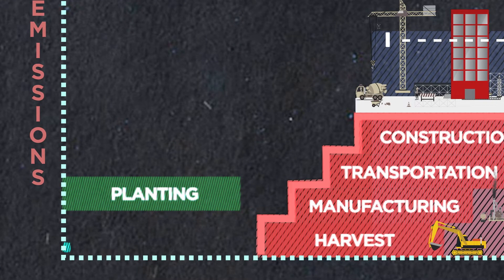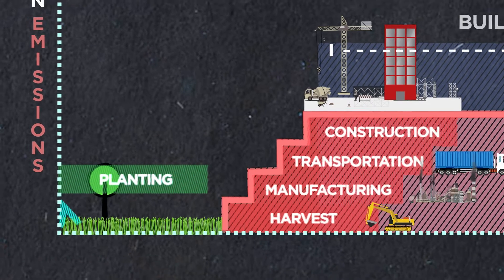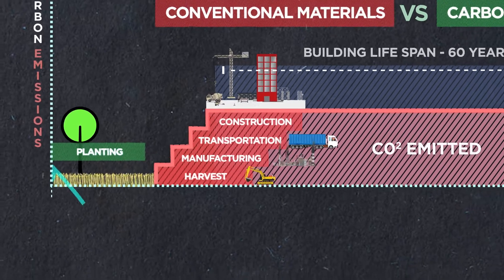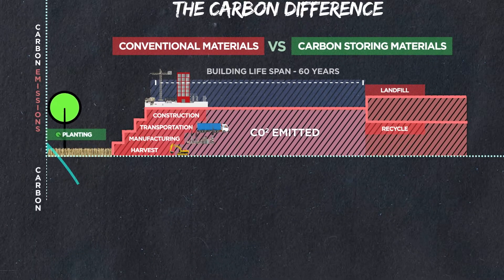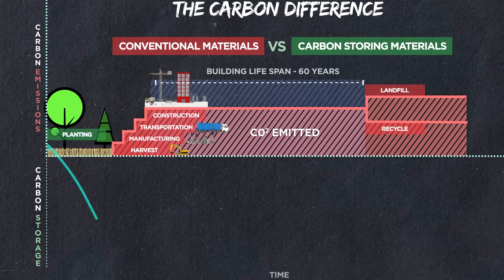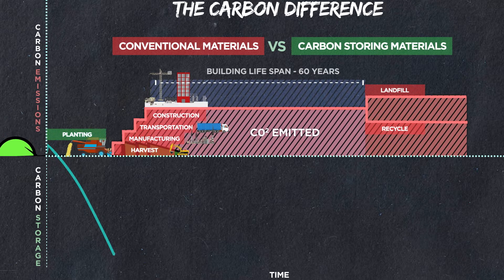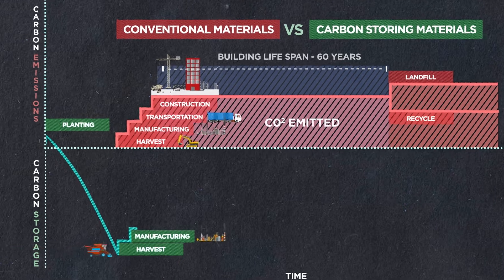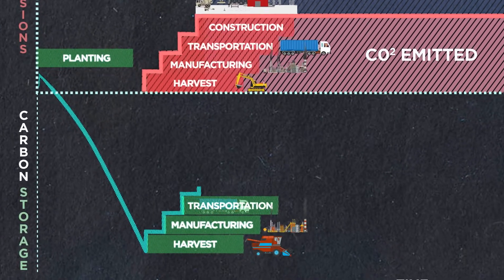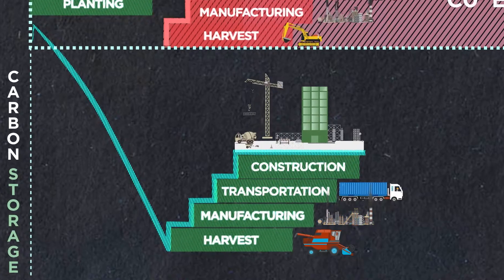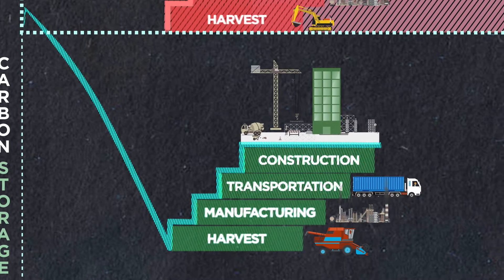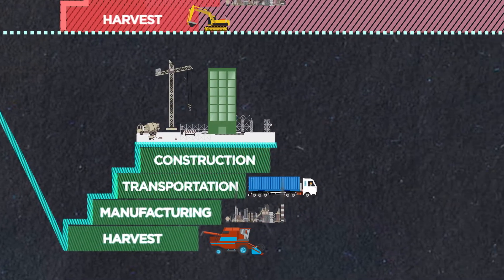First, the product is planted, so there is some carbon released in that process. But then the plant starts to grow, and as it grows, through photosynthesis, it starts absorbing carbon from our atmosphere and storing it inside the plant. This process continues until the plant is ready to be harvested. Then we go through the same process as before, but the difference is we start the process at a negative carbon number because of the CO2 it absorbed while growing.